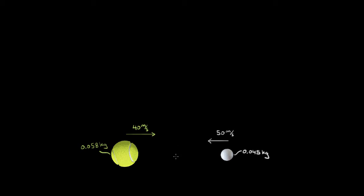Here's pretty much the fastest way you can solve one of these elastic collision problems when you don't know two of the velocities. In this case, we don't know the final velocities. We know the initial velocity of the tennis ball and its mass, we know the initial velocity of the golf ball and its mass, but we don't know the final velocities of either ball.